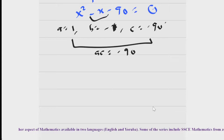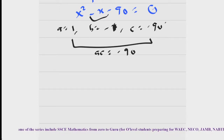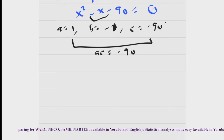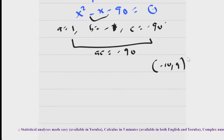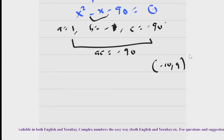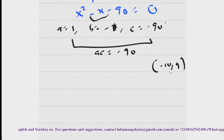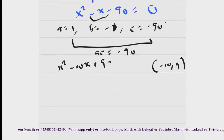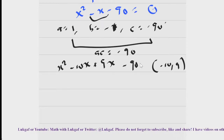You find the factors of 90, then think carefully: out of the factor pairs of 90, which two numbers multiply to give minus 90 and add to give minus 1? Those pairs are minus 10 and 9 — because minus 10 multiplied by 9 gives minus 90, and minus 10 plus 9 gives minus 1. So you substitute these as the middle terms, giving: x² minus 10x plus 9x minus 90 equals zero.